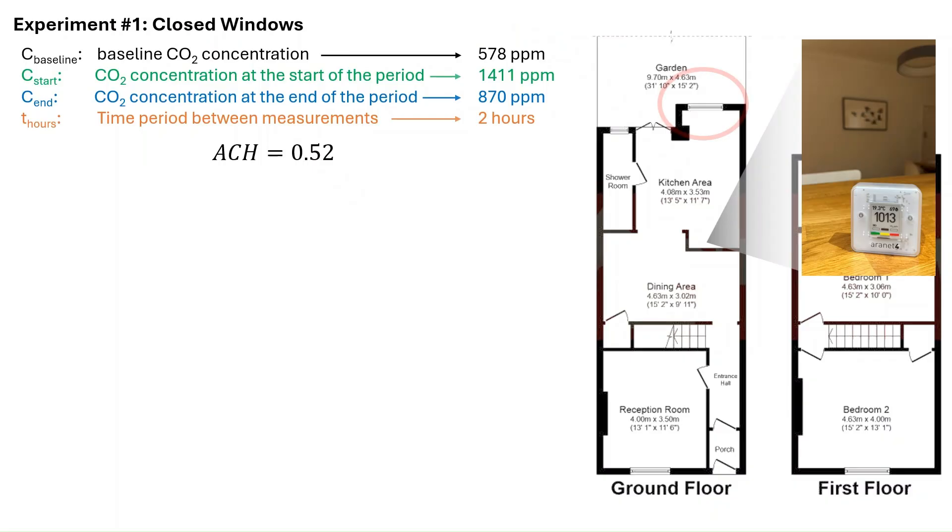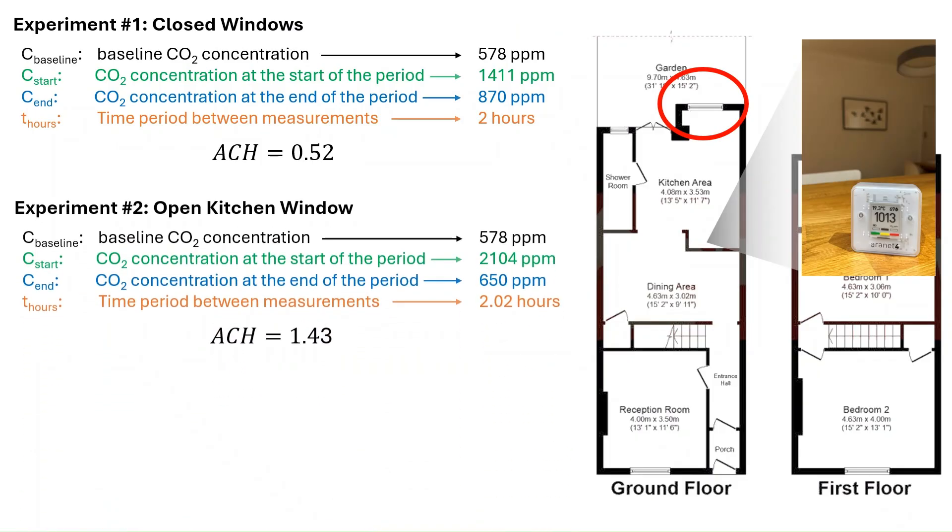So, what happens when I open my kitchen window? Well, when I do that, I get numbers that look like this. And when I put them into the calculator, again, ACH of 1.43. That's a little better, but still under the recommended value of 4.